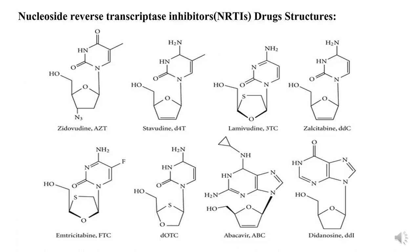These are the structures of drugs under the category of nucleoside reverse transcriptase inhibitors (NRTIs). Examples: zidovudine, stavudine, lamivudine, abacavir, zalcitabine, emtricitabine, didanosine.